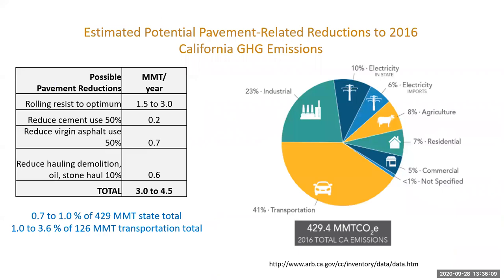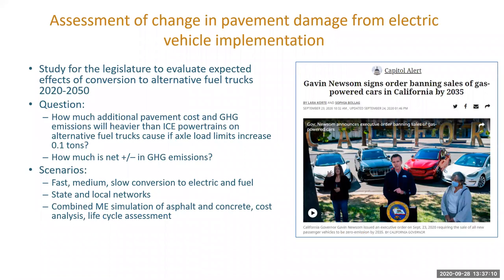Switching gears: looking at California greenhouse gas emissions, we've made massive gains in electricity production and a lot of industrial production, but we have not made progress on transportation. About 41% of California's greenhouse gas emissions come from trucks and cars. We can make a small contribution with how we deal directly with the pavement — my estimate is about 0.7 to 1% change in the overall state greenhouse gas emissions. We need to make our contribution, but our biggest question is how do we design the infrastructure to handle changes in the vehicle fleet.